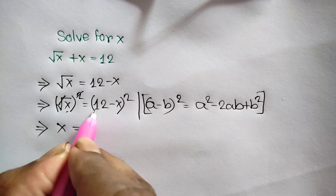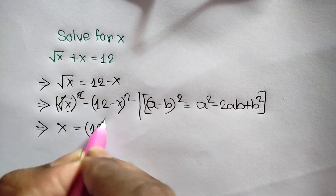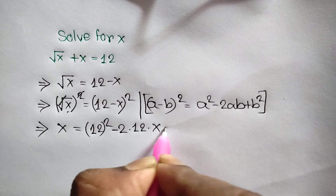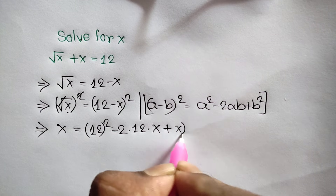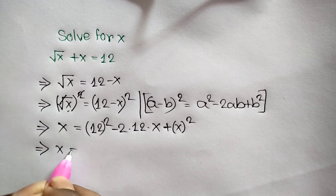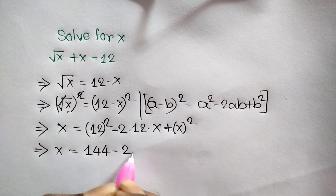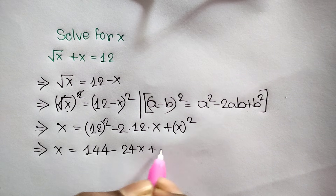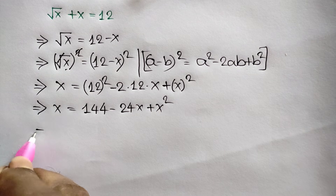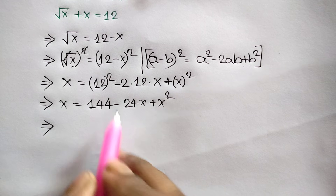So it will be remaining: x is equal to now applying this rule we will get 12 squared minus 2 times 12 times x plus x squared. So x is equal to 144 minus 24x plus x squared.